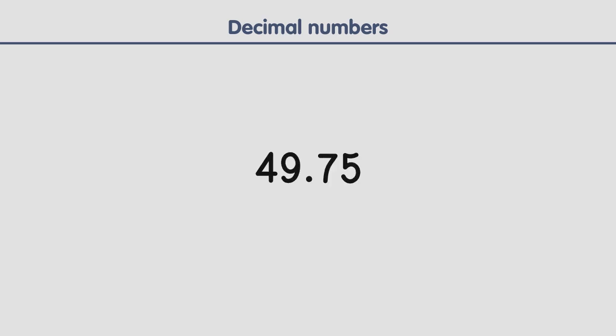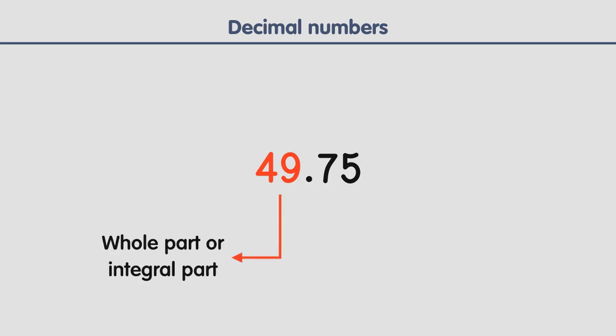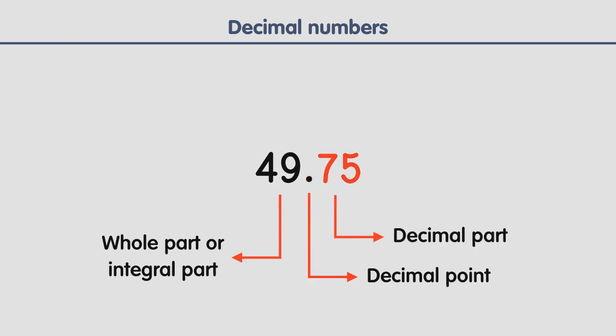Let's look at another decimal number: 49.75. 49 is the integral part. The dot in between 49 and 75 is the decimal point. 75 is the decimal part. It's read as 49.75. There are two decimal places in 49.75.